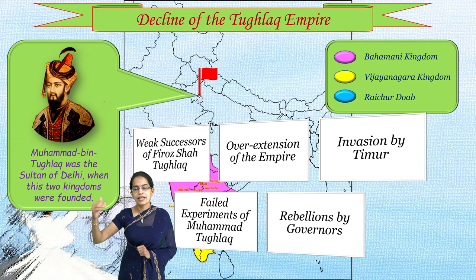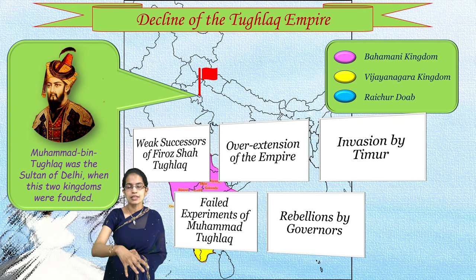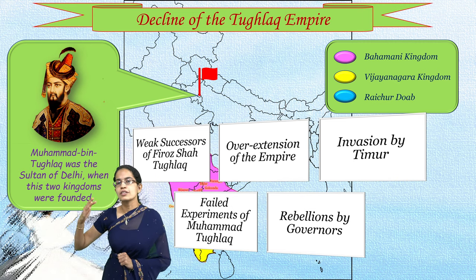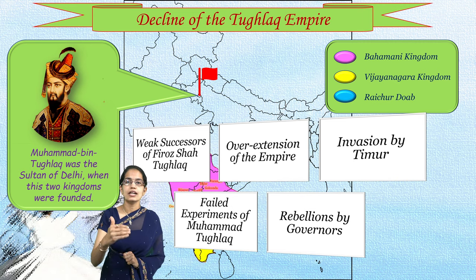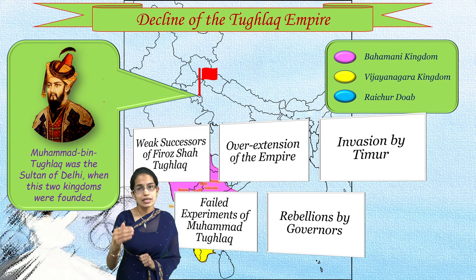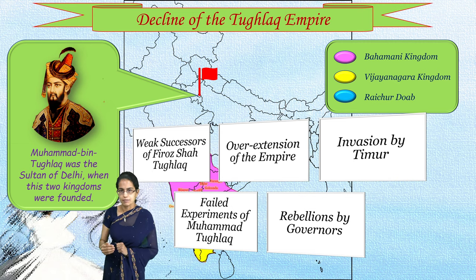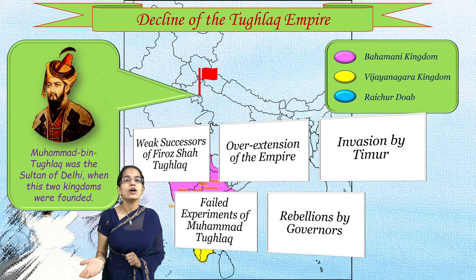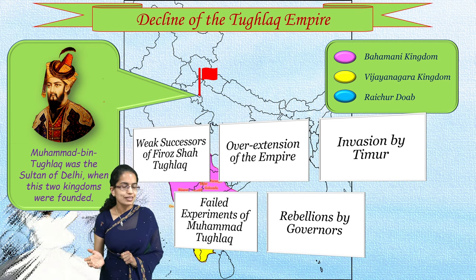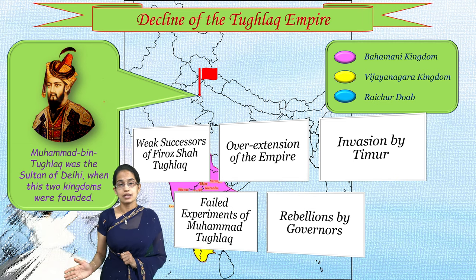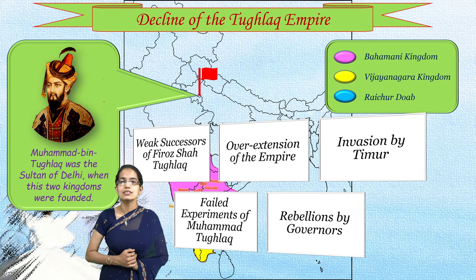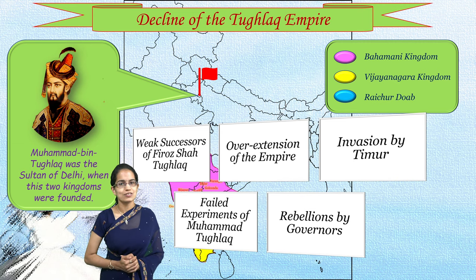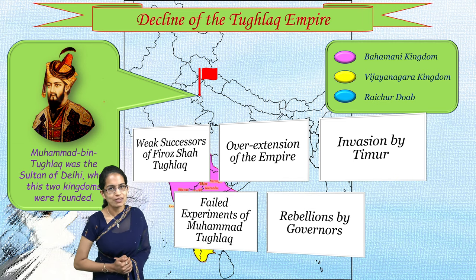The over-extension of the Tughlaq empire led governors of various regions - including Assam, Bengal, Jaunpur, Malwa, Mewar, and the Deccan - to rebel and establish themselves as independent rulers. It was in this process that the Vijayanagar and Bahamani kingdoms established themselves as separate empires. This was a general introduction to the Vijayanagar and Bahamani kingdoms, which will be covered in greater detail in separate lectures.